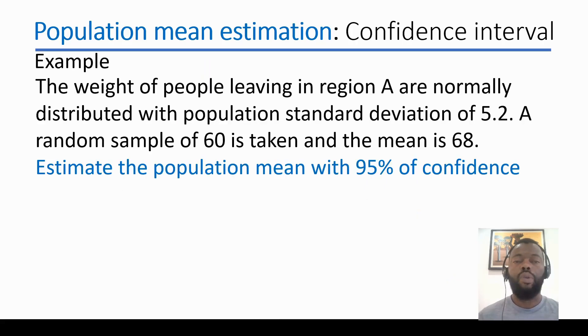The weight of people living in region A is normally distributed with a population standard deviation of 5.2. A random sample of 60 is taken and the mean is 68. Estimate the population mean with 95% confidence.